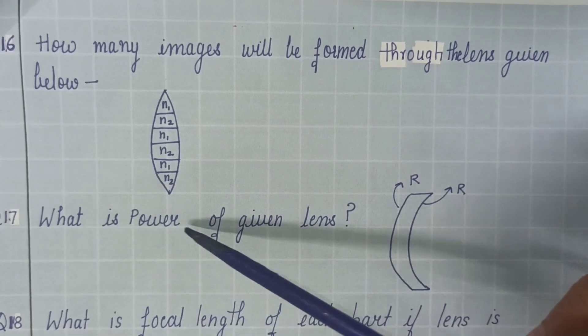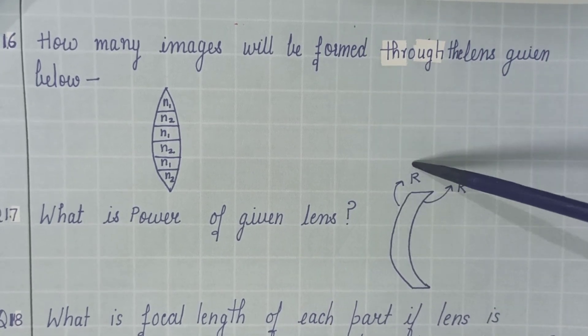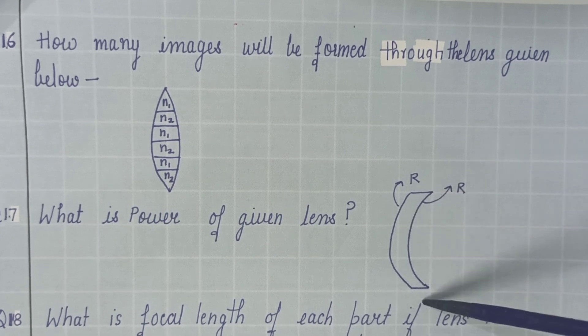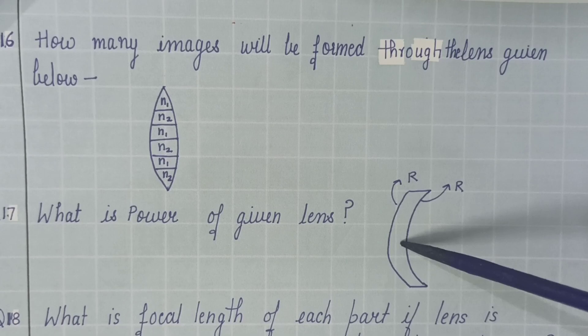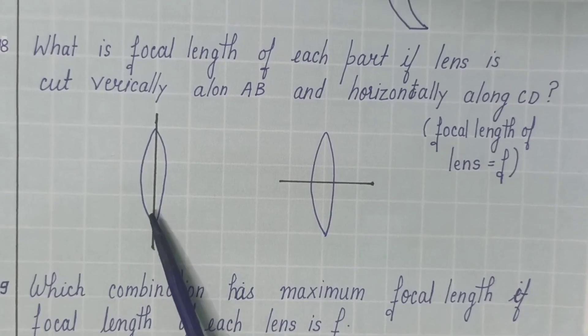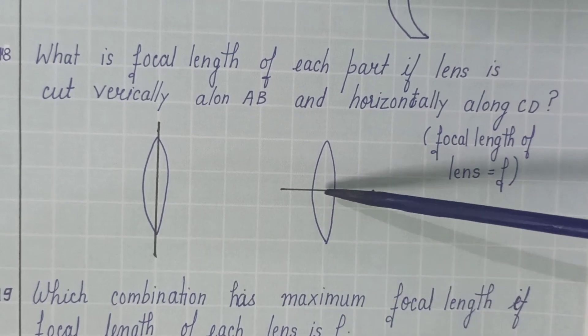The next question, what is power of a given lens? And you are having a lens which is having same radius of curvature and this is actually sunglass. Power of this lens is zero.